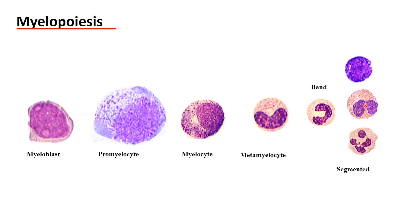Make a note: the eosinophil granules are not red. Usually they are brown — darker, not as fine as a neutrophil. Much bigger and darker granules can be found in the basophilic granulocyte.